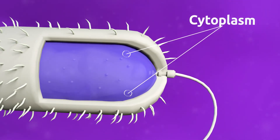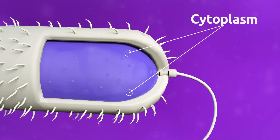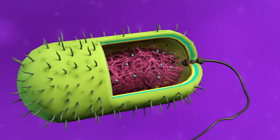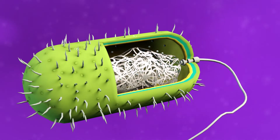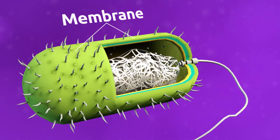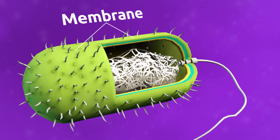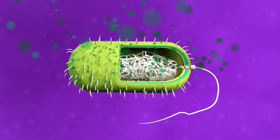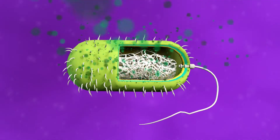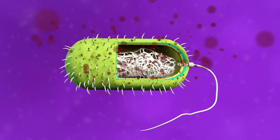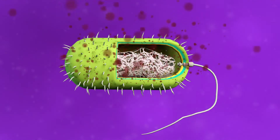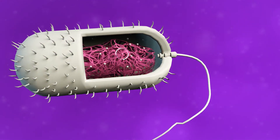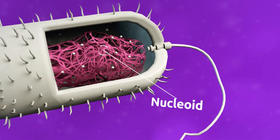Organelles are located in the cytoplasm. The membrane is a layer that surrounds the cell. Membranes structure and protect the cell from the outside environment. They also allow food in and release waste substances.